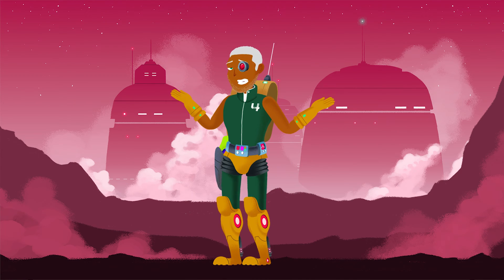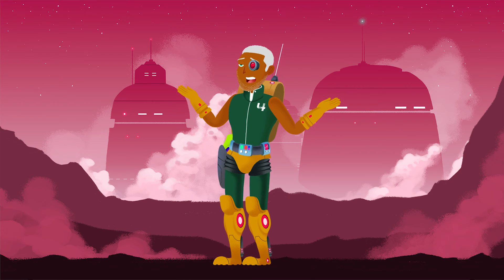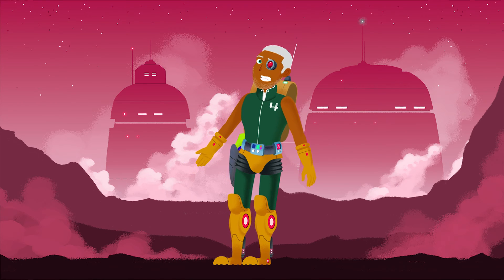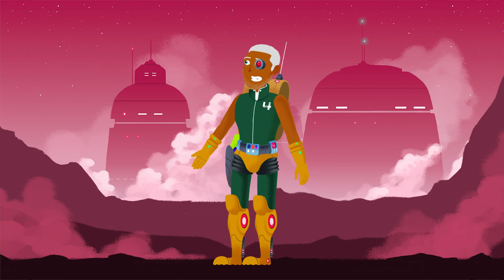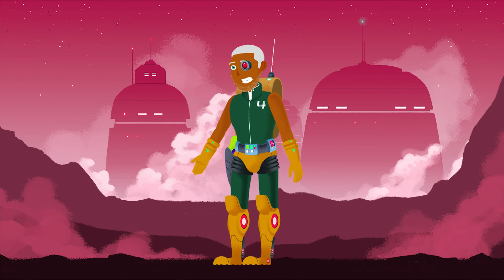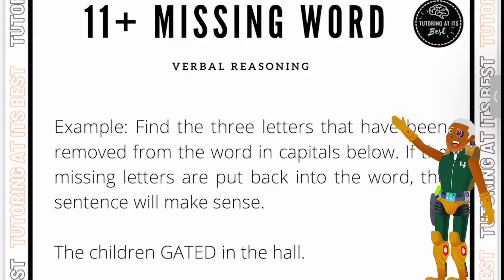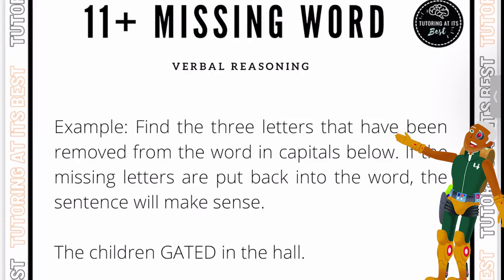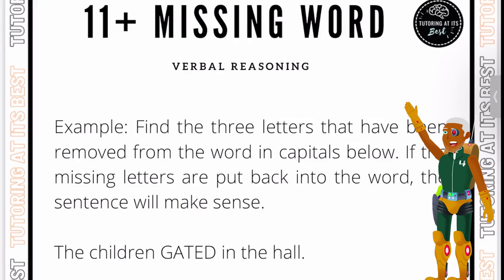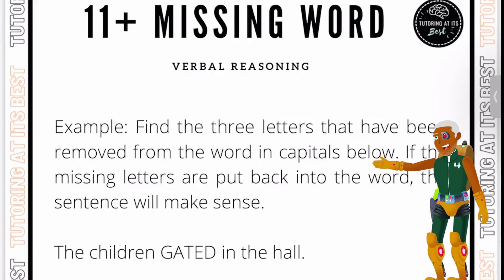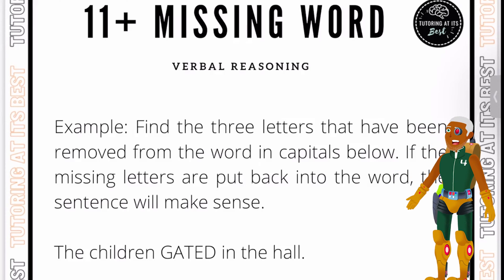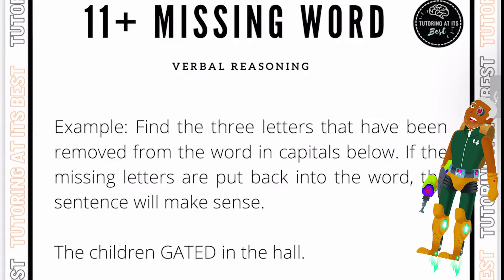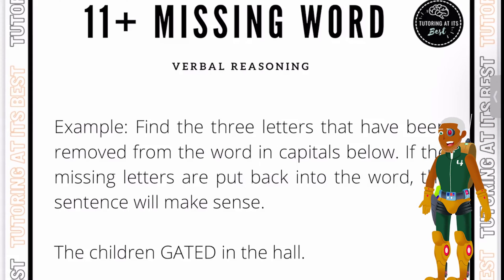With this type of question, you're given a sentence in which one word is written in capitals, and the word has three consecutive letters that are removed. These three letters form a separate three-letter word, and when inserted into the capitalized word without changing the order of the letters, will form a correctly spelled word.